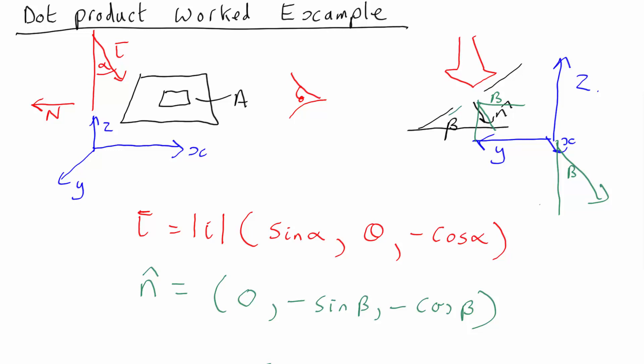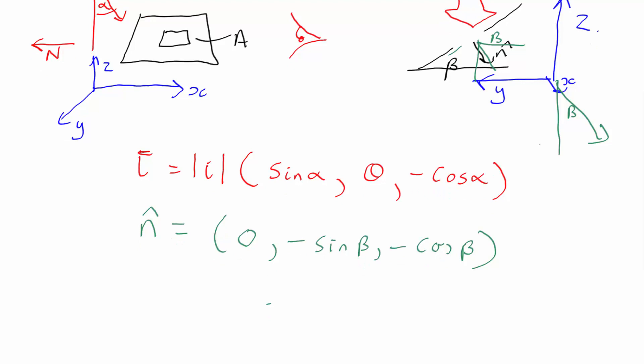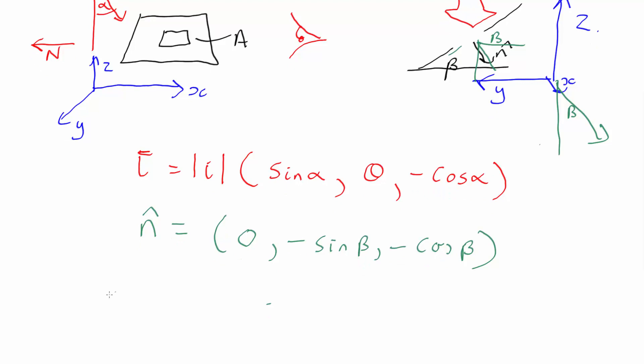So then we can just work out the total flux. The total flux is the dot product of the intensity vector dot product n times the area. So that's going to be mod of the intensity times the area. And then the dot product, you take each component of the vectors, multiply them together separately, and add them together.